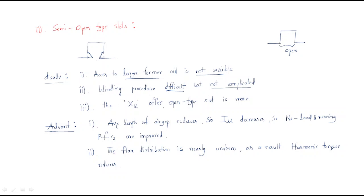The leakage reactance of the open type slot is more compared with the semi-open slot. In the open type slot there is free flux, that's why leakage reactance is more there, while the semi-open slot has less leakage reactance. Setting aside the disadvantages, we also have some advantages.